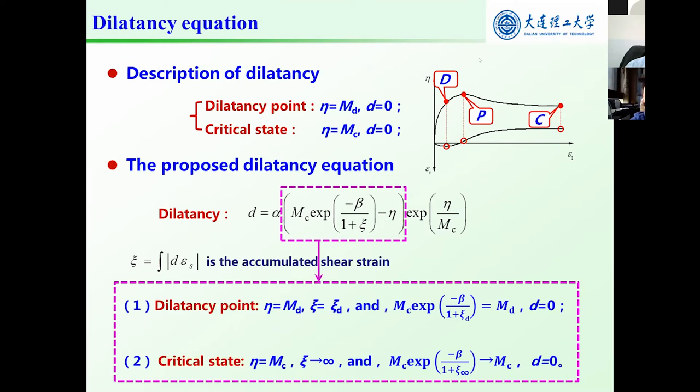There are totally 11 parameters and seven of them can be determined by monotonic test results. This is the determination method. Four parameters related to cyclic loading can be obtained by a PSO method.